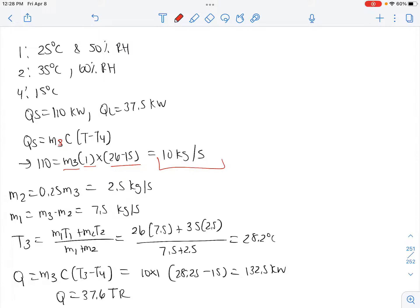M1 is M3 minus M2, which is 2.5 kilograms per second. Our M2 is 0.25 times M3, which is 2.5 kilograms per second. And M1 is M3 minus M2, which is 7.5 kilograms per second.